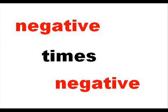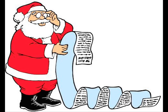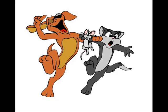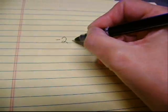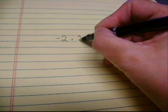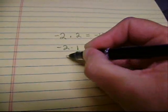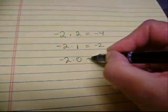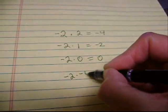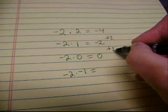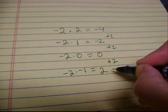Now a negative times a negative is often — this seems illegit. But if you just submit a list, the pattern goes something like this: negative two times two is negative four, negative two times one is negative two, negative two times zero is zero. Each answer is increased by two. So negative two times negative one has to be positive two.